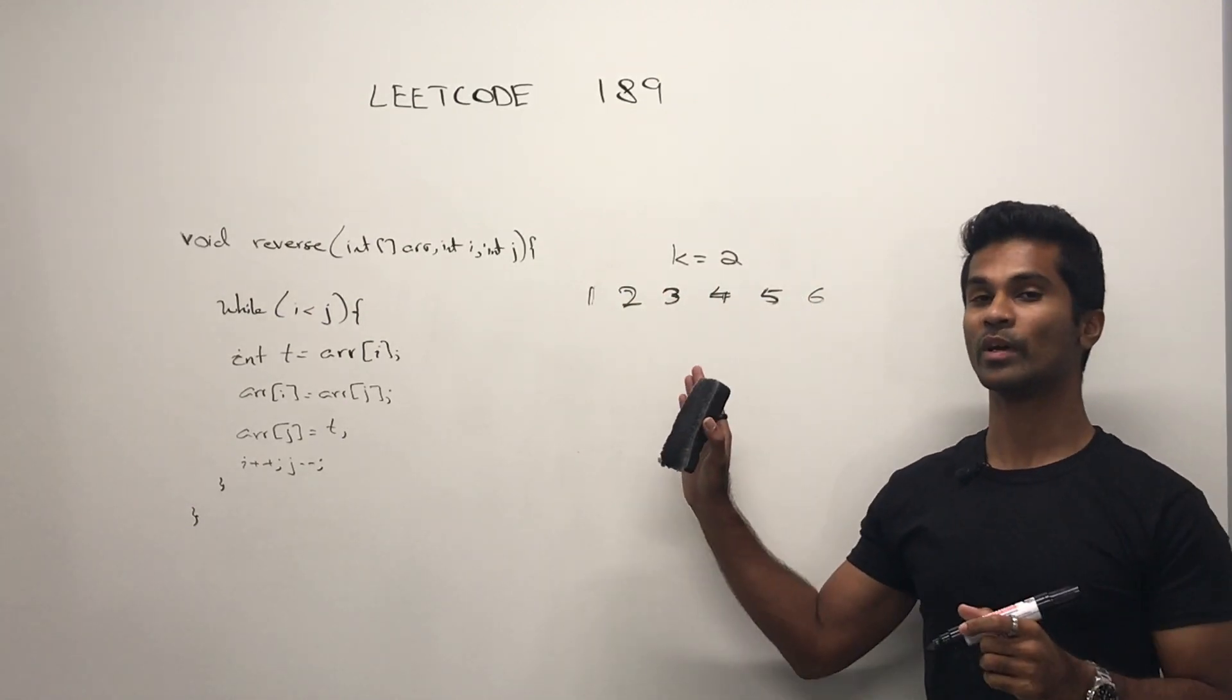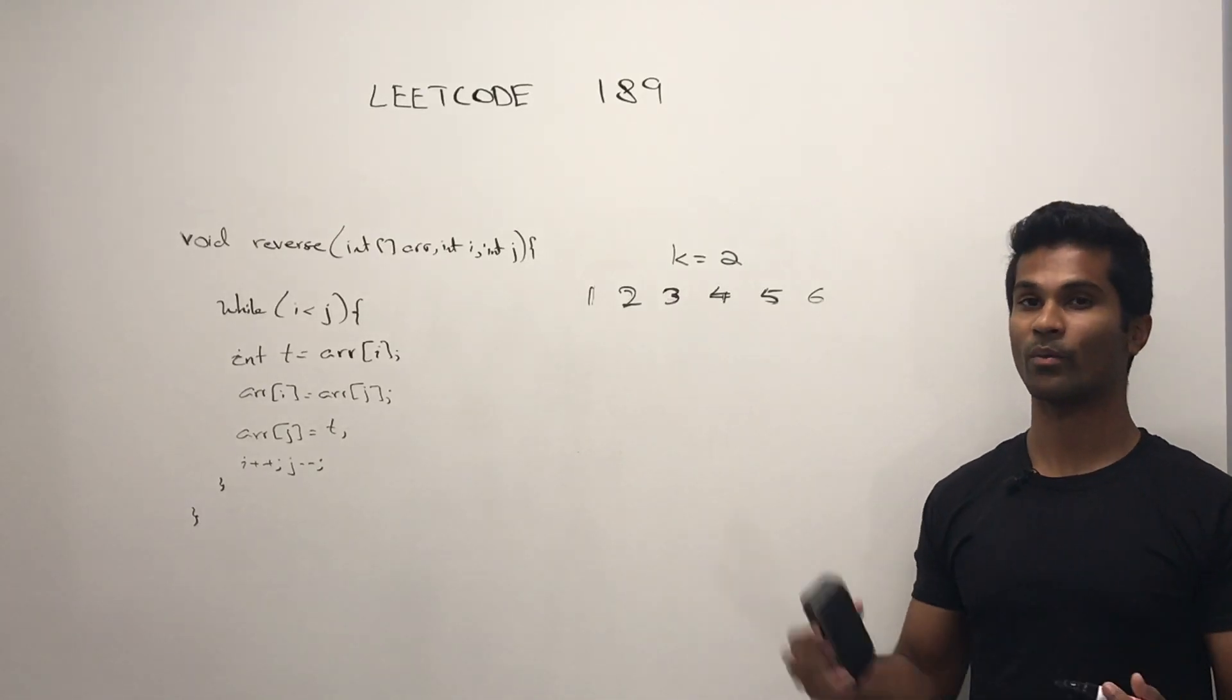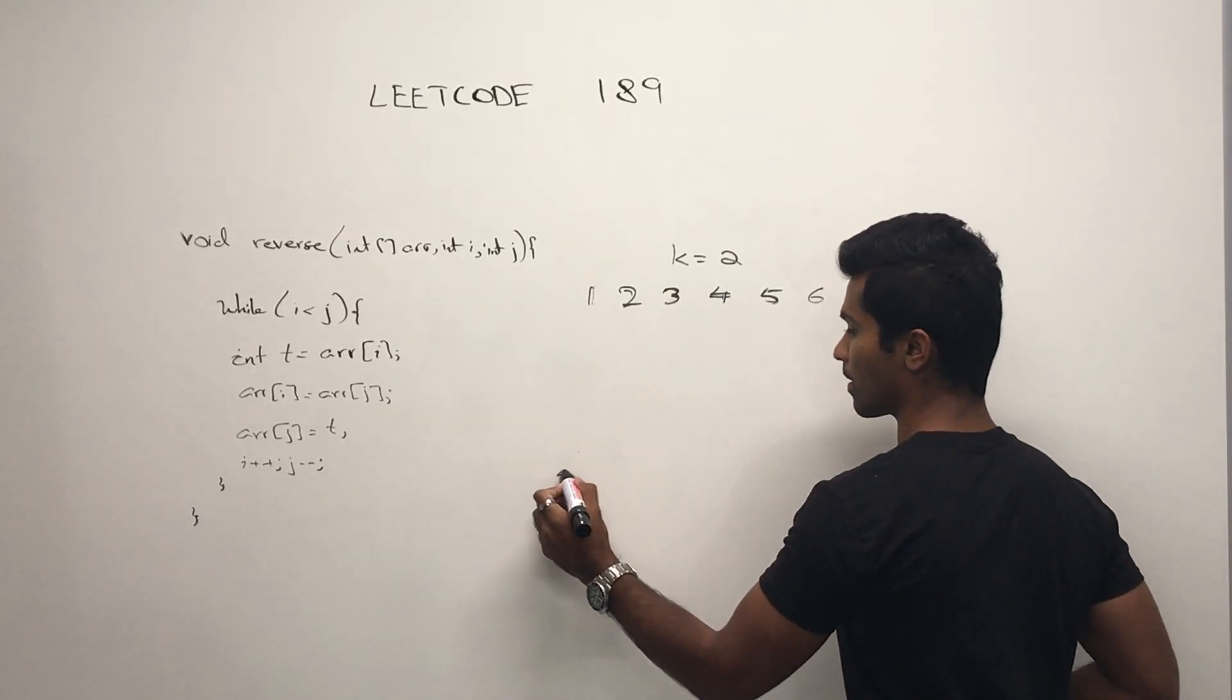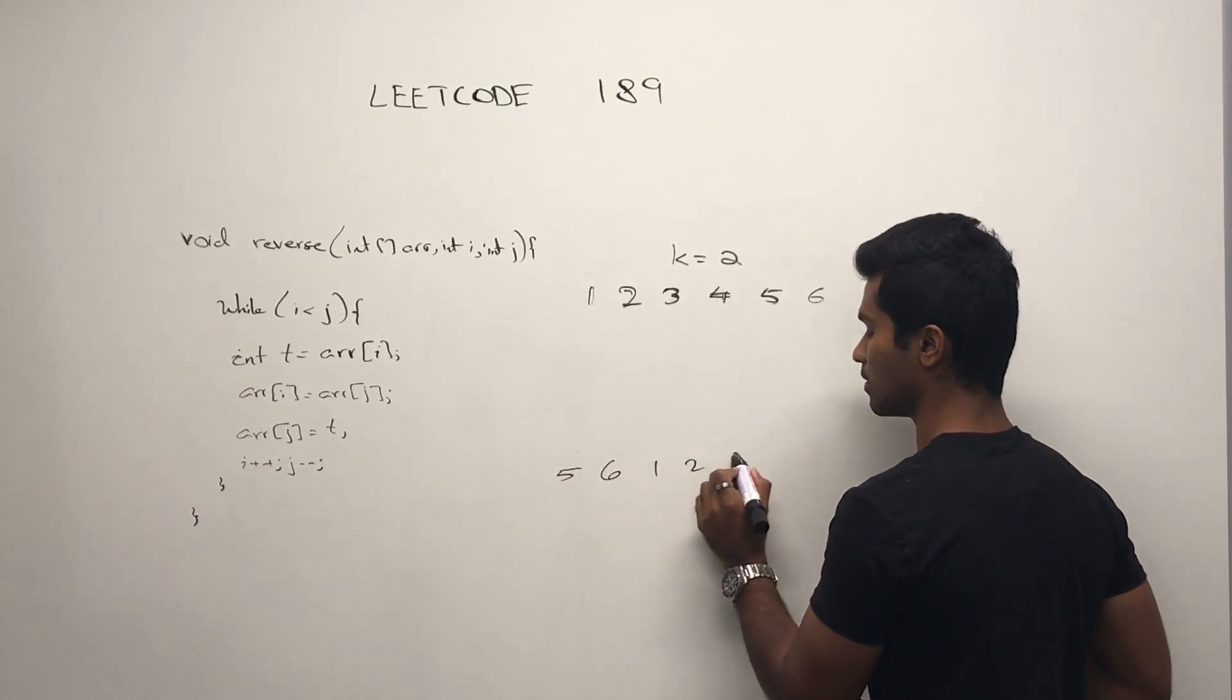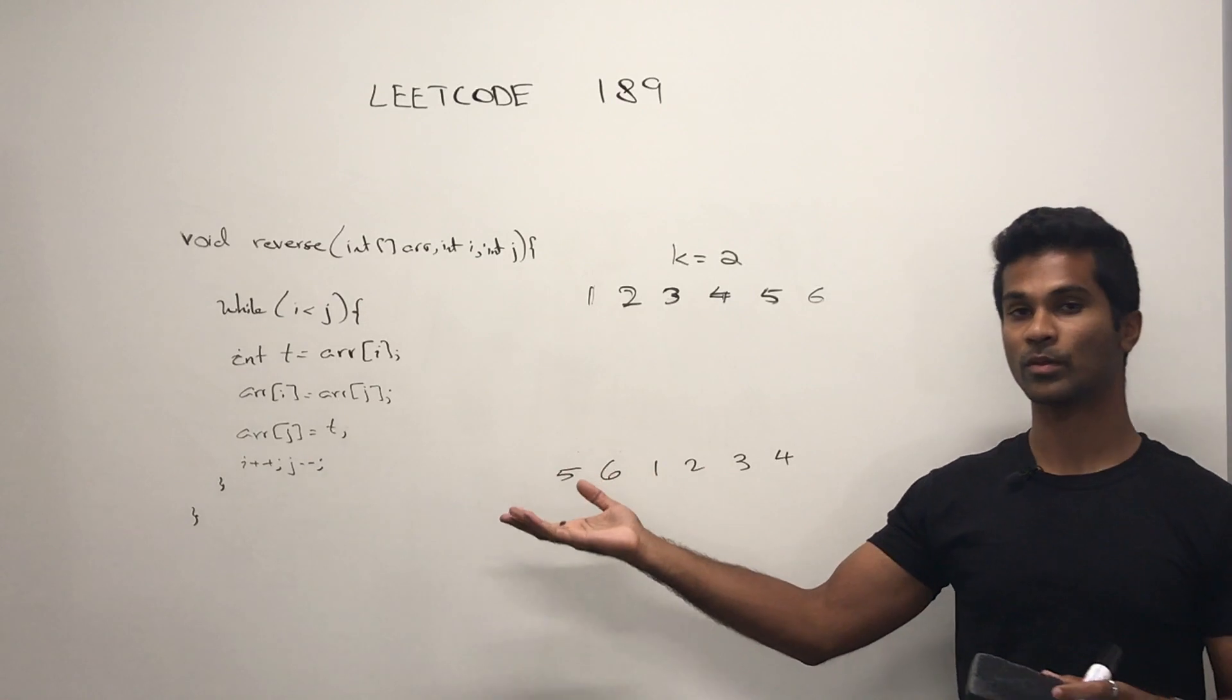Let's say for example, we had an array with six elements and k is equal to two. We know that we need to make this thing look like this. So how do we go from here to here using this subroutine?